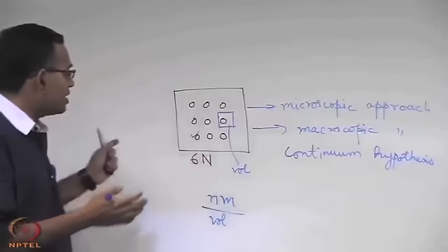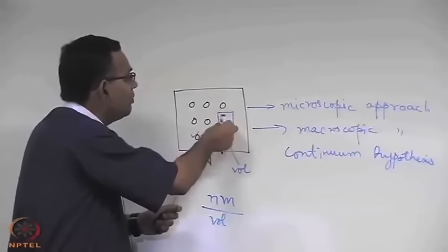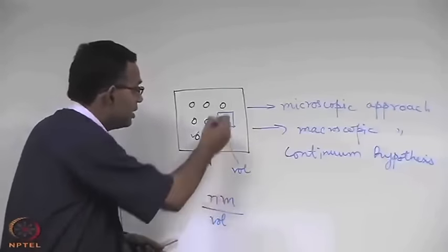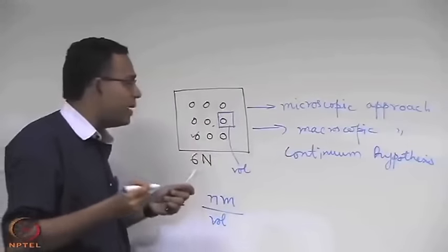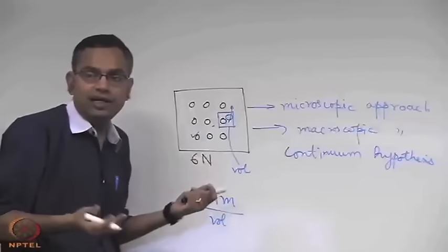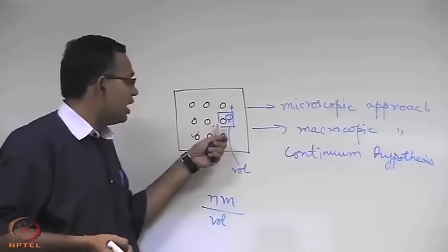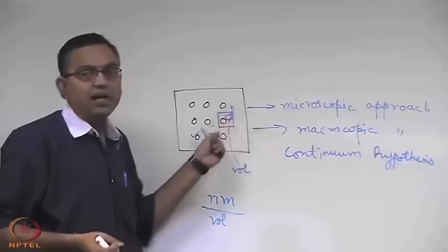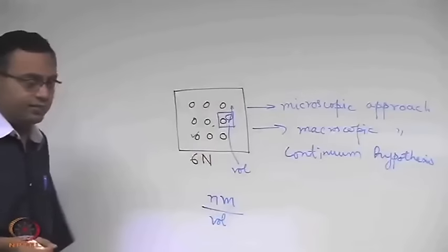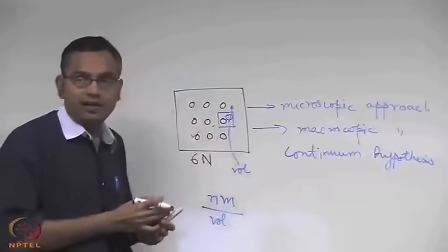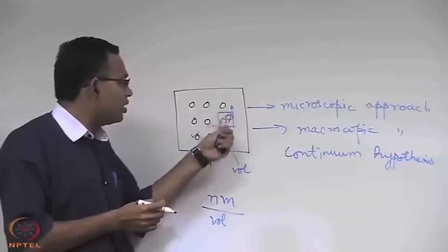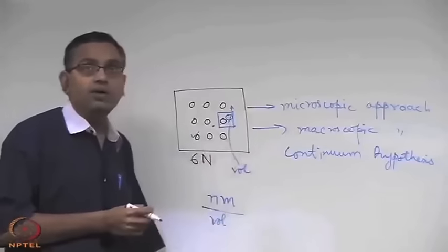Why not below that critical volume? Because then the interrogating volume may have very few molecules. These molecules are in random motion, so if there are just two molecules and suddenly one leaves, that can give rise to an error of around 50 to 100 percent — a very high percentage of error due to uncertainties in the molecular occupancy of the chosen interrogating volume. This can happen if the volume is very small, or if the system itself has few molecules — that is called a rarefied system.